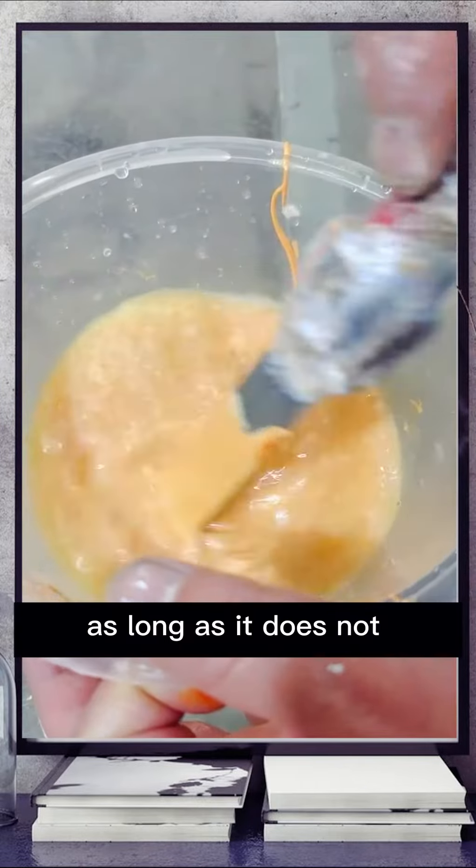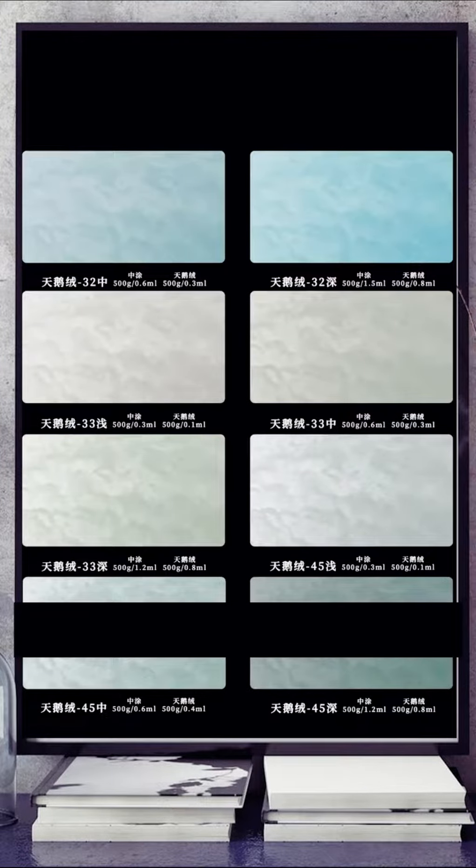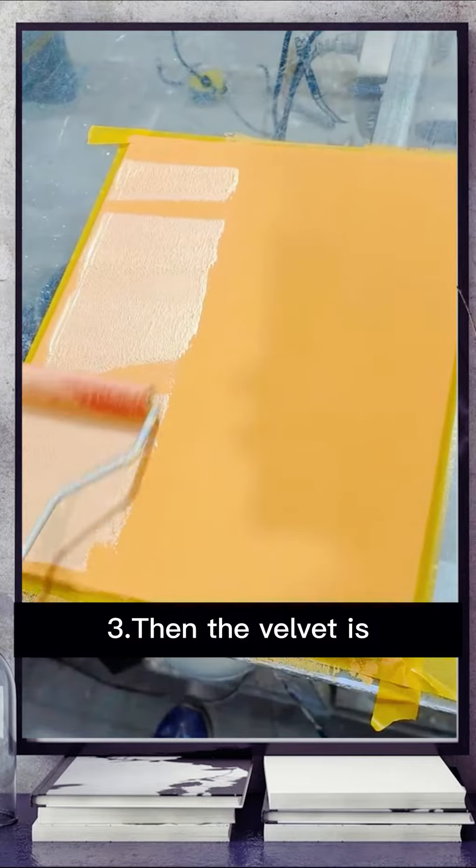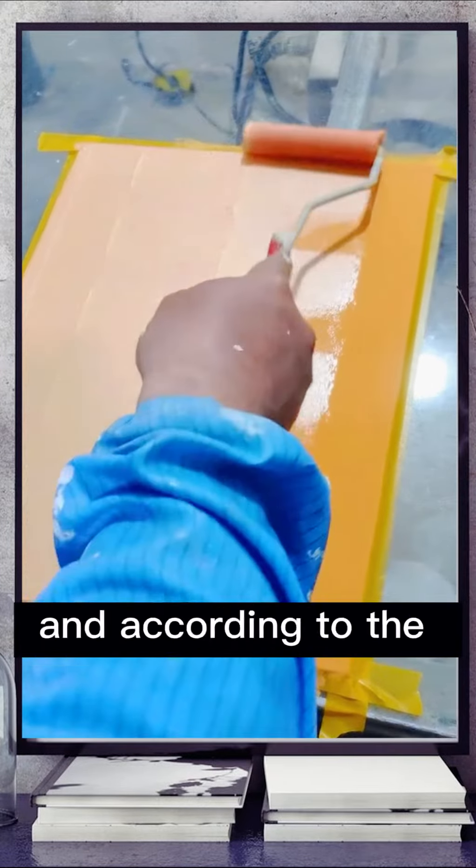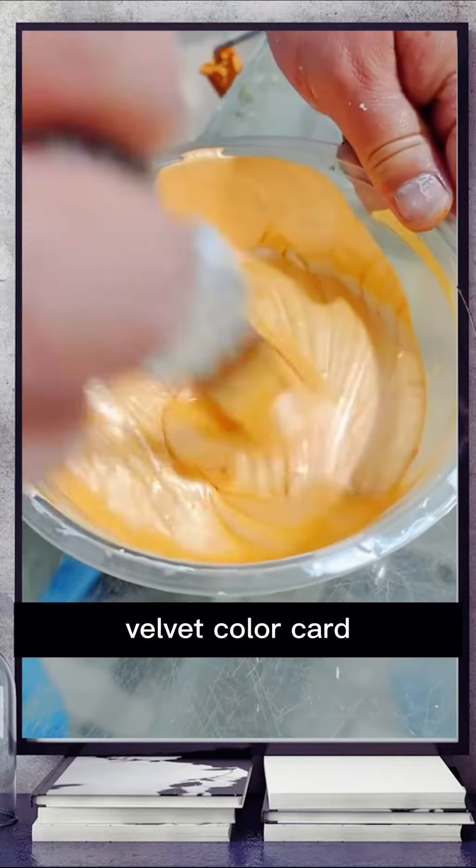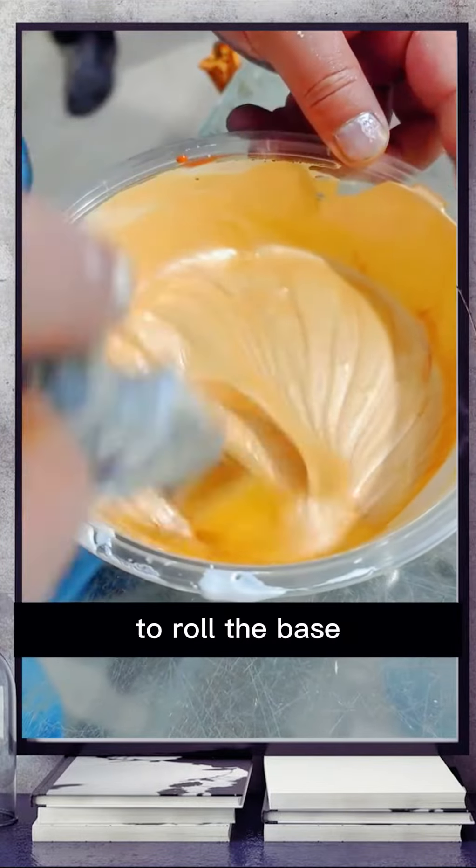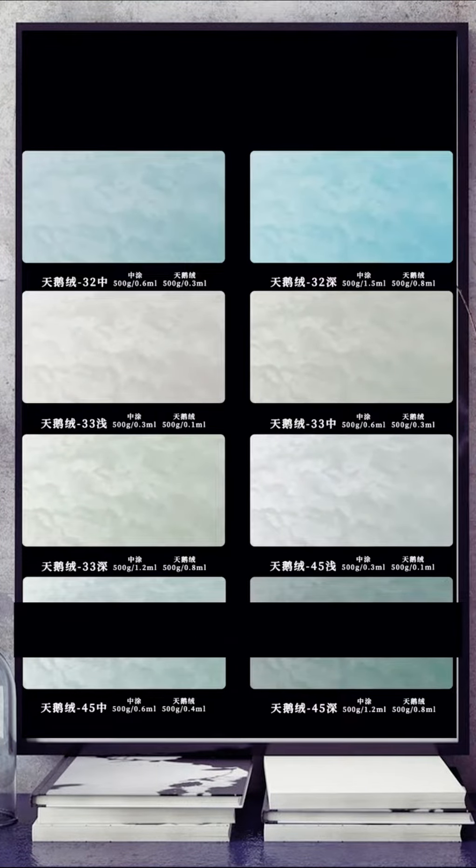As long as it does not penetrate the bottom. Third, mix the velvet with about 50% water and, according to the velvet color card, use a roller brush to roll the base. Wait for it to dry.